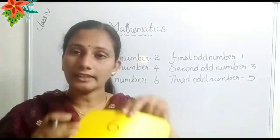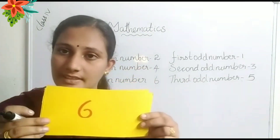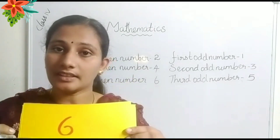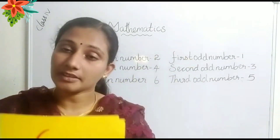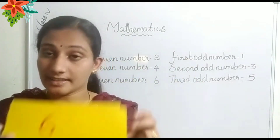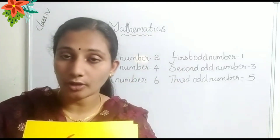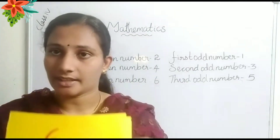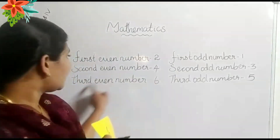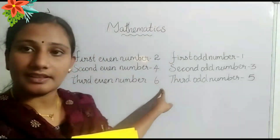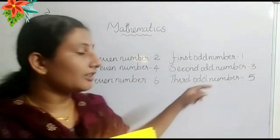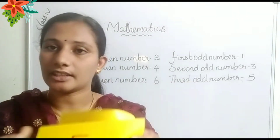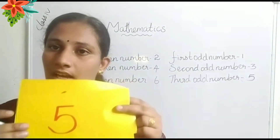Then look at the next number. Which number is this? 6. The number 6 is the 3rd even number. Is it an even number or odd number? It is an even number. Third even number is 6. And third odd number is 5.